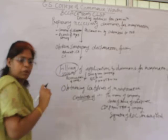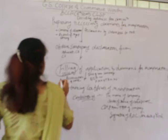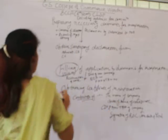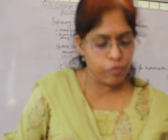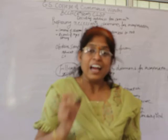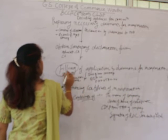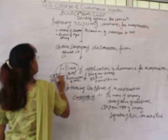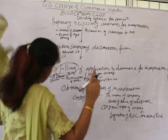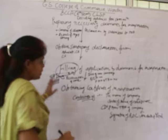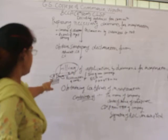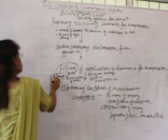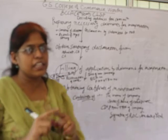All of this is mentioned in what is known as the SPICE form. SPICE stands for Simplified Proforma for Incorporating Company Electronically. I will write here: S-P-I-C-E. This form — SPICE 32 — must be filled and submitted to the ROC.